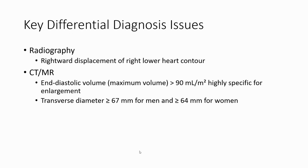Key diagnostic criteria: on CT, the biaxial volume more than 90 mm per meter squared is specific for right atrial enlargement. Transverse diameter more than 67 mm for men and more than 64 mm for women.